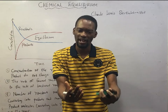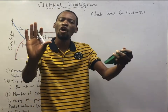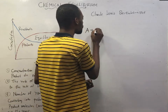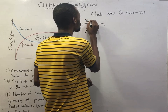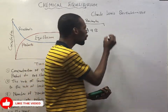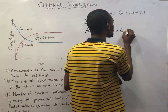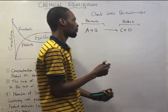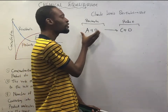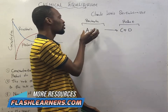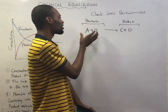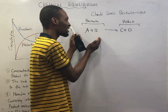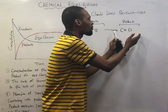This takes us to chemical reactions. Chemical reactions occur when one or more substances referred to as reactants — let's say A plus B — are converted to one or more substances referred to as products. This is a chemical reaction.